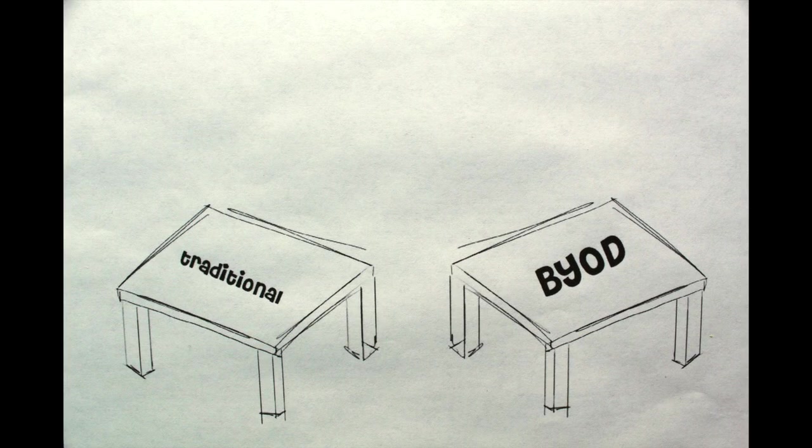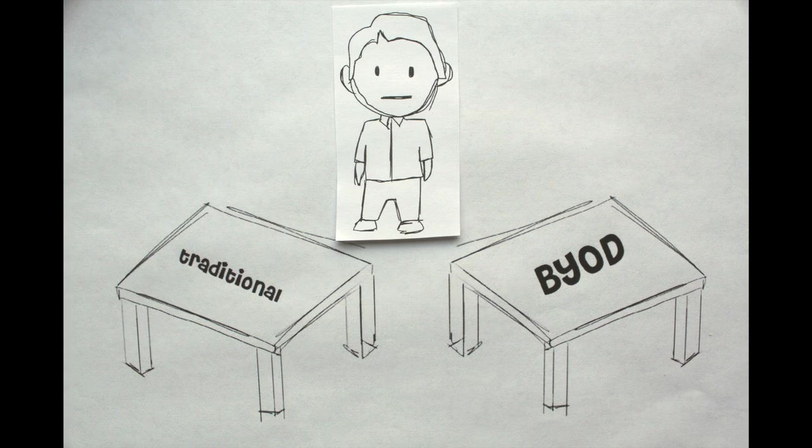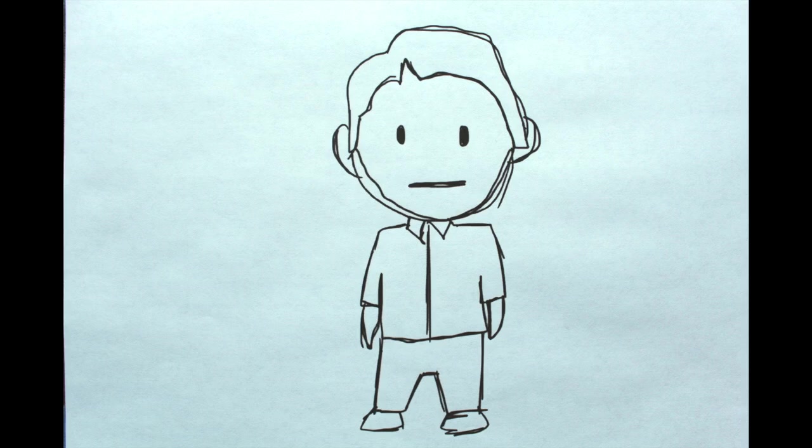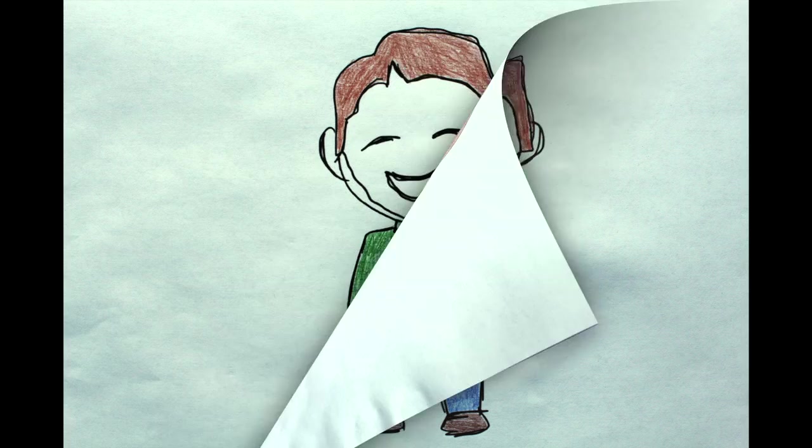When you arrive at the labs, there will be different check-in tables for traditional stations and Bring Your Own Device. Register at the Bring Your Own Device table and continue on into the green room. Before exiting the green room and entering the labs room, you will receive an activation code which you will need to start your lab.